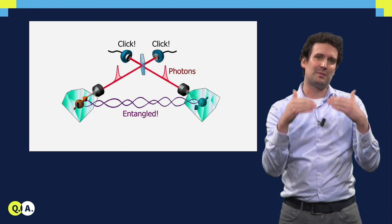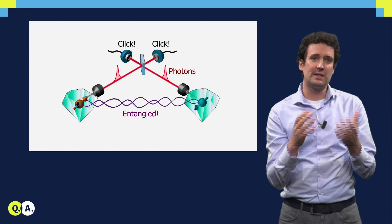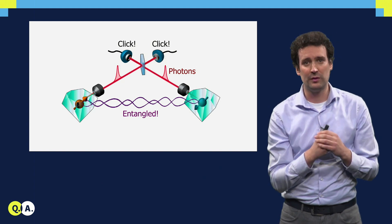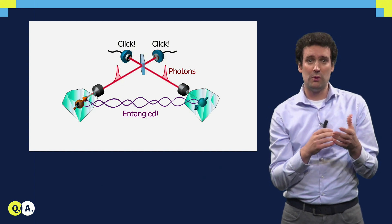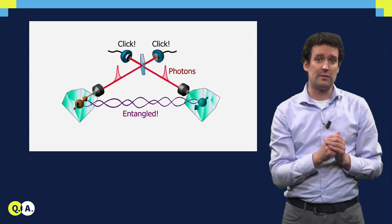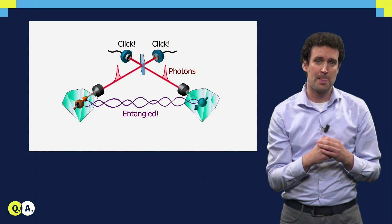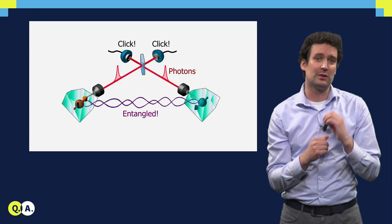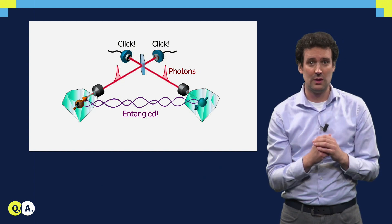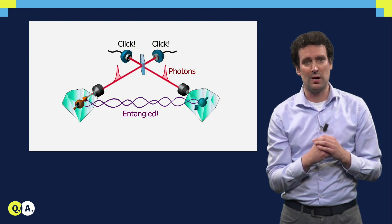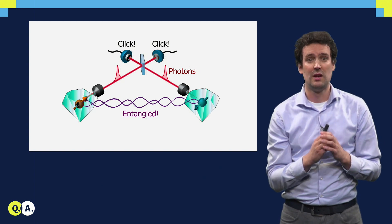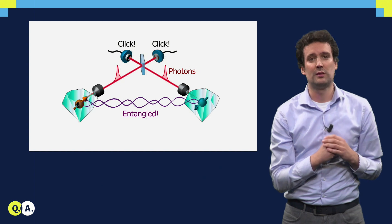This means that if the detectors behind the beam splitter register a certain pattern of photons, then we know that for example one of the NV centers is pointing up and the other one is pointing down. And because we fundamentally cannot know which one is up and which one is down, quantum mechanics tells us that we have created an entangled state between two distant NV centers.